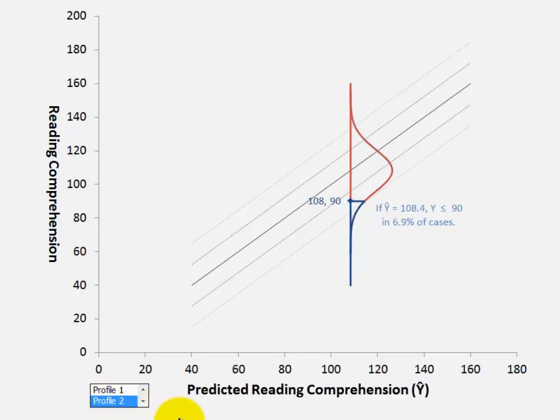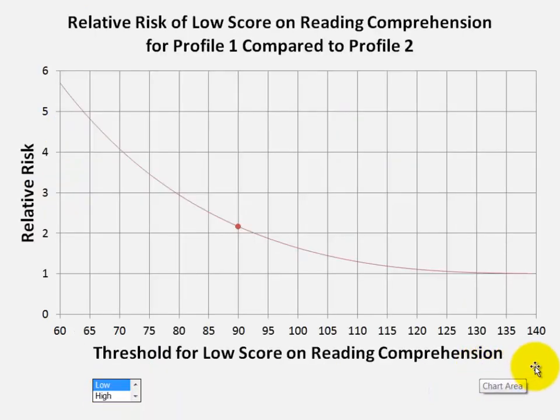What if we don't talk about a score of 90, but some other threshold, some other low score for reading comprehension? Well, if it's 90, we can see that the relative risk of scoring 90 or lower is a little over 2 times higher with profile 1 compared to profile 2.